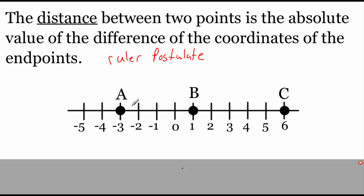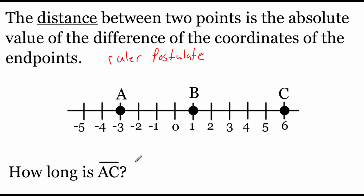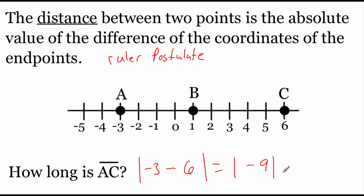So if we're looking specifically at this line segment drawn out on our number line and we wanted to figure out how long segment AC is, then based on this ruler postulate what we're going to do is take the absolute value — we show absolute value with two vertical bars — of the difference. Difference means we're going to be doing some subtraction with the end coordinates. So we're looking at point A which is negative 3 and point C which is 6. If we take negative 3 minus 6 we get negative 9, but there's still these absolute value bars around the outside. Absolute value bars just make whatever number is inside them positive, so instead of having a negative 9 the answer would be positive 9.